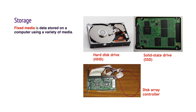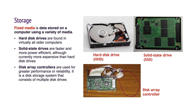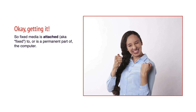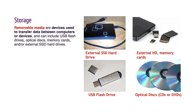Fixed media is data stored on a computer. Types of fixed media include hard disk drives, solid state drives, and disk array controllers. So fixed media is attached — aka fixed — to or is a permanent part of the computer. Removable media are devices used to transfer data between computers or devices. They include USB flash drives, optical disks, memory cards, and external SSD hard drives.